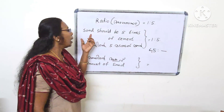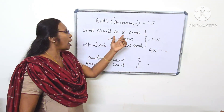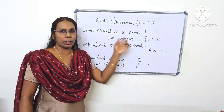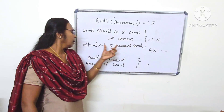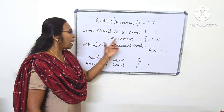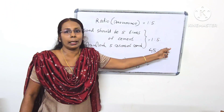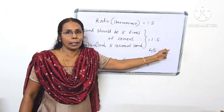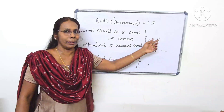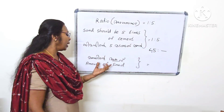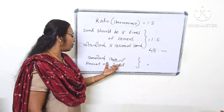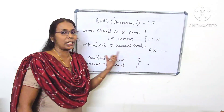Sand should be 5 times of cement. The amount of sand should be 5 times of cement. We have to calculate the amount of sand.